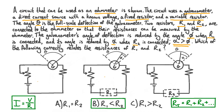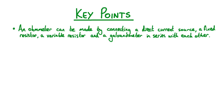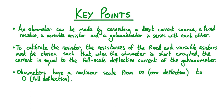Let's now review the key points from this video. An ohmmeter can be made by connecting a direct current source, a fixed resistor, a variable resistor, and a galvanometer in series. To calibrate the ohmmeter, the resistances of the fixed and variable resistors must be chosen so that when the ohmmeter is short-circuited, the current equals the full-scale deflection current of the galvanometer. Finally, ohmmeters have a non-linear scale, varying from infinite resistance — indicated by zero deflection — to zero resistance, indicated by full deflection. This is a summary of the design of the ohmmeter.